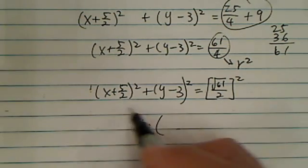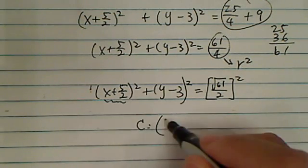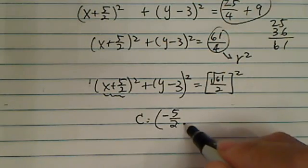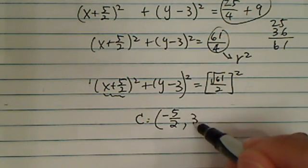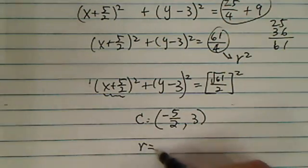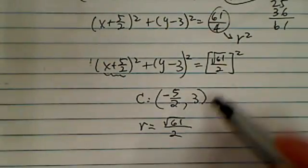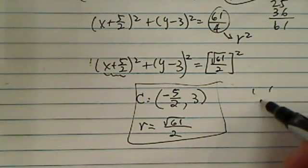So here's your center. Now remember, setting this equal to 0 gives you the first point for the x-coordinate, and setting this one equal to 0 gives you the y-coordinate. And the radius is radical 61 over 2. That wasn't too bad. Have a confident day.